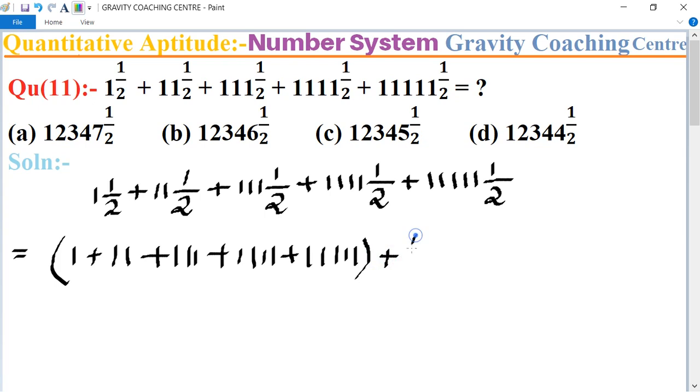So we have five times 1 upon 2, plus 1 upon 2, plus 1 upon 2, plus 1 upon 2, and again 1 upon 2. Now add the whole numbers, so the total sum is 1, 2, 3, 4, 5.